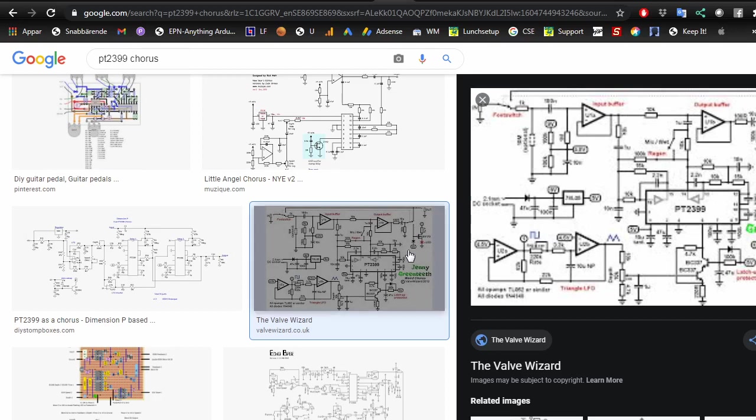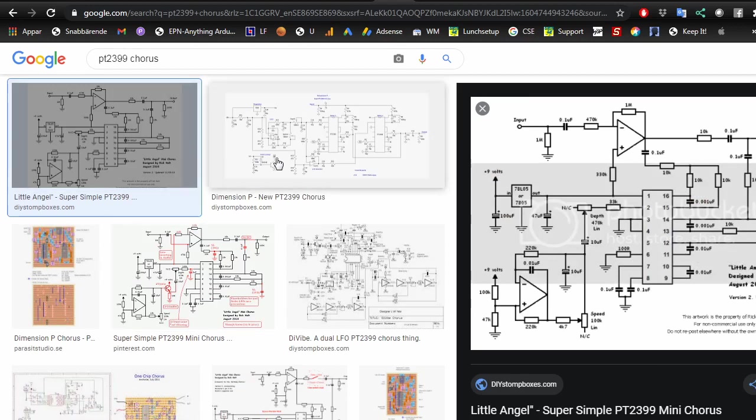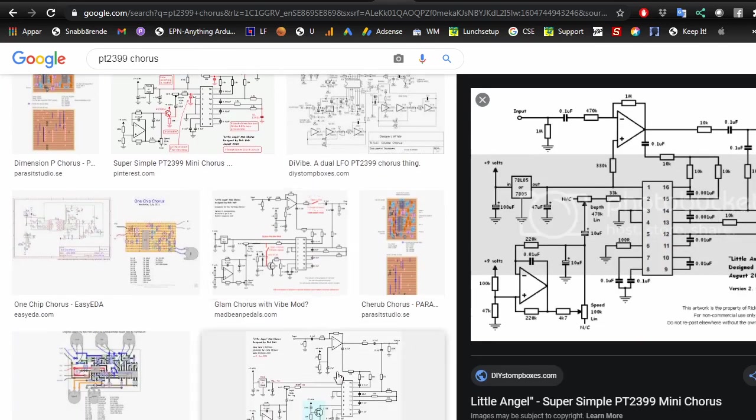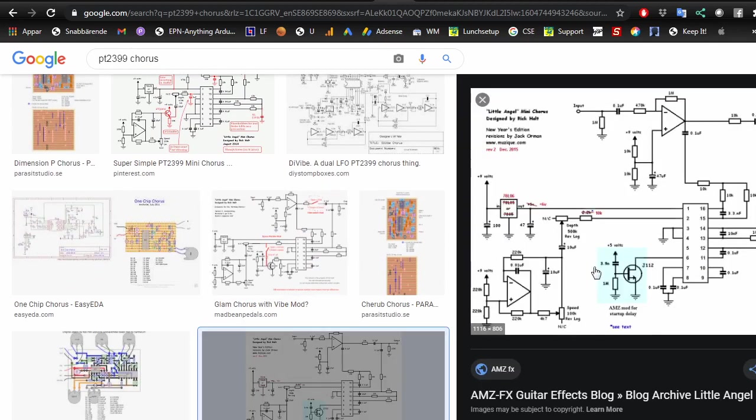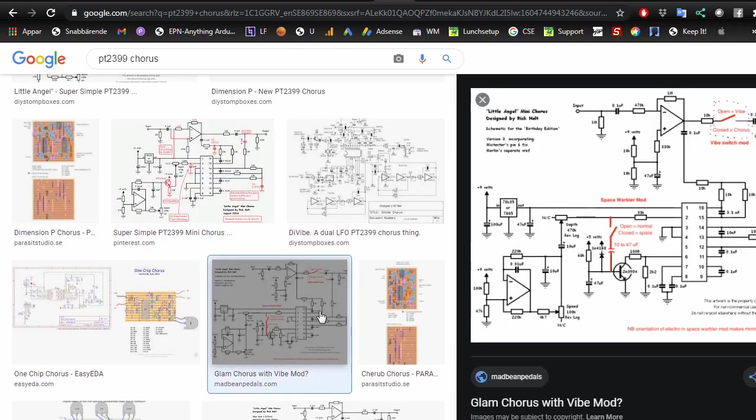There's the Jenny Green teeth and others. I wanted to make with just one PT2399, keep it simple. So I started to look at the Little Angel by Rick Holt. You have here different modifications. It starts with the startup mod which we talked about in an earlier video, so we can have really short delays but without the chip hanging.